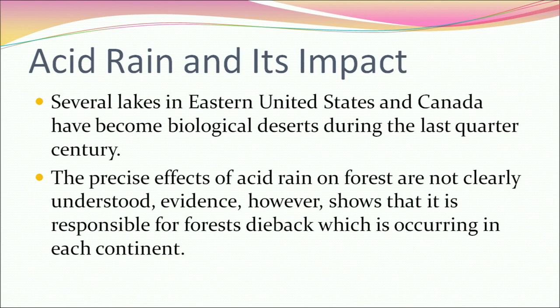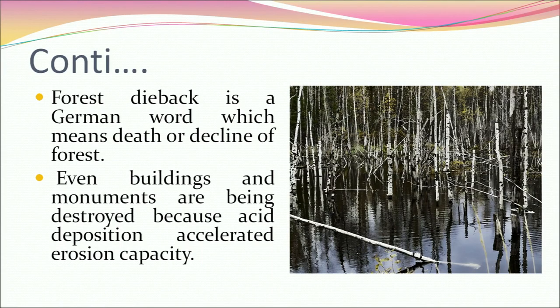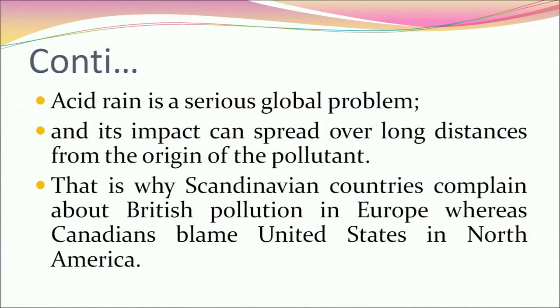Several lakes in eastern United States and Canada have become biological deserts during the last quarter century. Evidence shows that acid rain is responsible for forest dieback — a term meaning death or decline of forests — occurring on each continent. Even buildings and monuments are being destroyed because acid deposition accelerates erosion. Acid rain is a serious global problem, and its impact can spread over long distances from the origin of pollutants. That is why Scandinavian countries complain about British pollution in Europe, whereas Canadians blame the United States in North America.